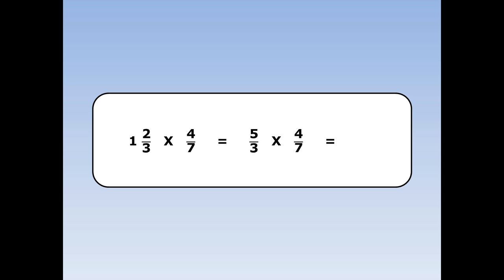Now we continue as before: top times top, bottom by bottom. 5 times 4 is 20, 3 times 7 is 21.